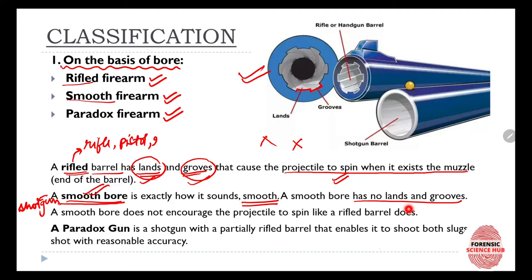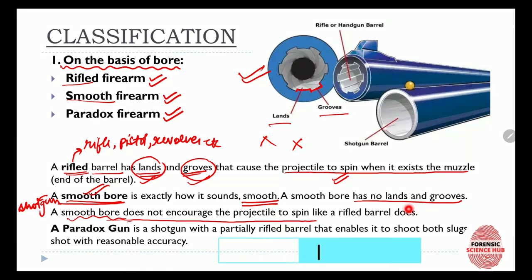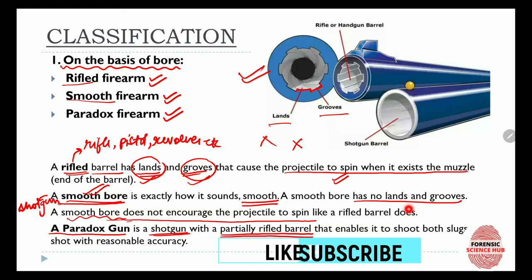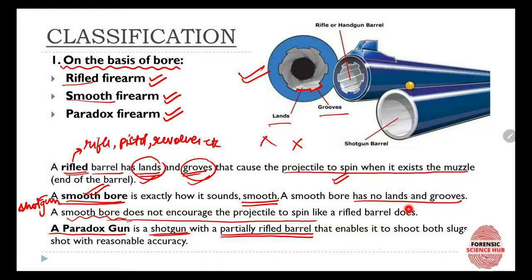pistols, revolvers, etc. Because there are no lands and grooves in a smooth bore, there is no rifling effect on the projectile. A paradox gun is like a shotgun with a partially rifled barrel — part of the barrel has lands and grooves while the rest is smooth.